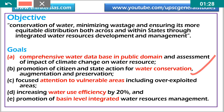Citizens need to be integrated into the scheme. Third goal is focused attention to vulnerable areas, including over-extracted areas of groundwater or highly polluted rivers. The fourth goal is increasing water use efficiency by 20% — we should not waste water unnecessarily.